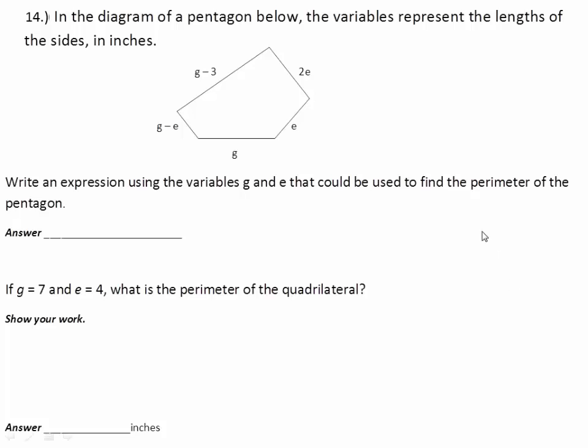So this says in the diagram of the pentagon below, the variables represent the lengths of the sides in inches. So you see a pentagon has five sides. All the lengths are variables or you have some sort of variable in them. Write an expression using the variables g and e that could be used to find the perimeter. So we're going to find the perimeter.